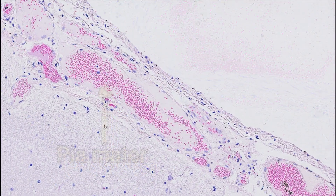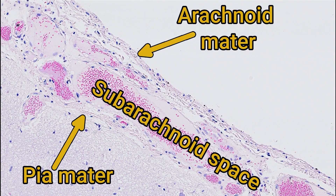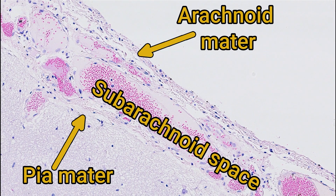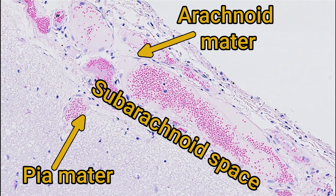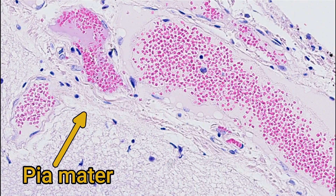Perhaps over here it's a little bit more convincing: we have collagen of the arachnoid mater with all of these nuclei being fibrocytes, then the subarachnoid space filled with blood vessels, and then just another thin little bit of collagen here. You can just make out the wavy fibers with a fibrocyte there for example.